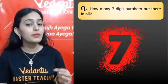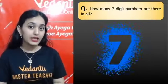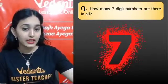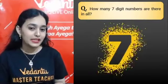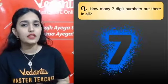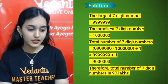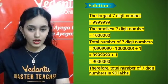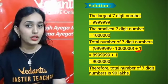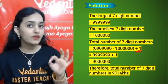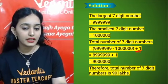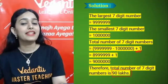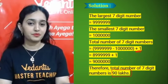The first question from RS Aggarwal is: how many seven-digit numbers are there in total? Come on, answer the question. You first have to write down the largest seven-digit number, then the smallest seven-digit number. There are a total of 90 lakh seven-digit numbers.